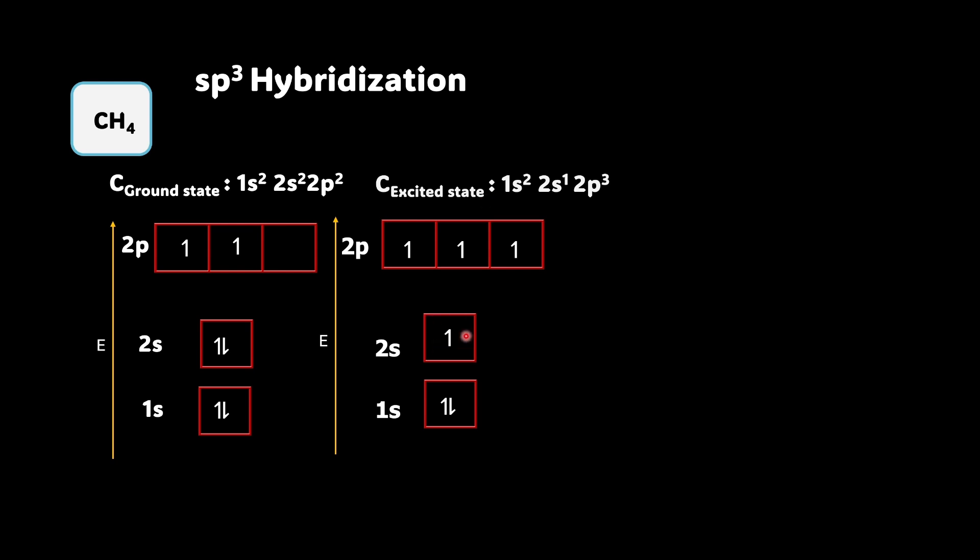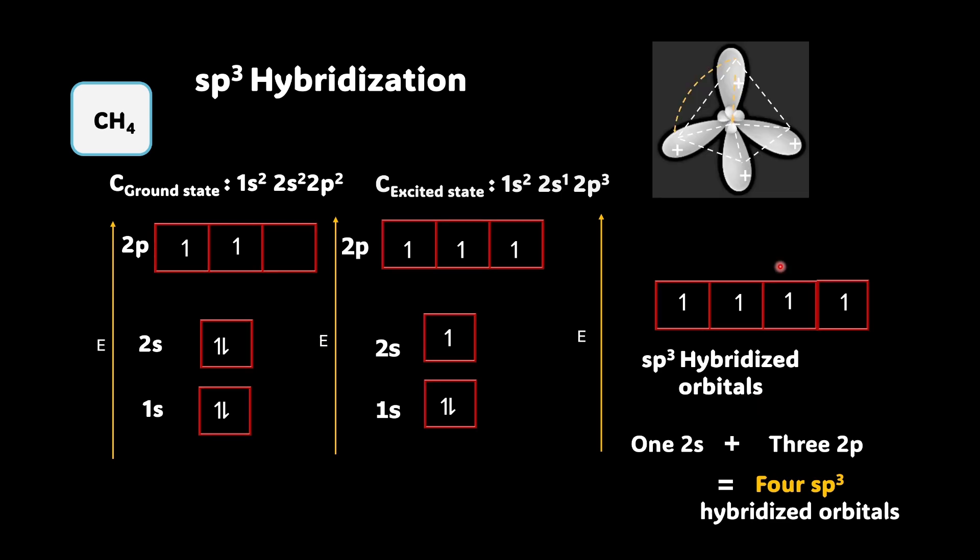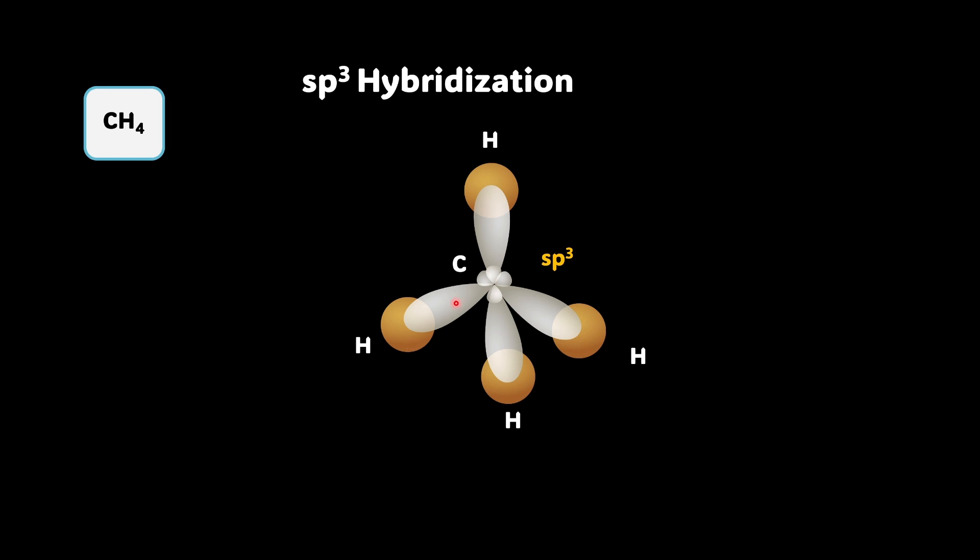So now this 2s and three of these 2p hybridize together. So next step is the hybridization. They hybridize together to form four sets of equivalent sp3 hybrid orbitals. And hence what you end up getting here is a tetrahedral geometry which looks like this.